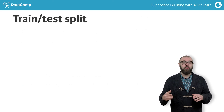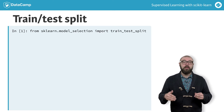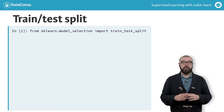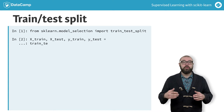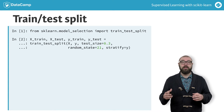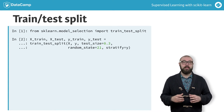To do this, we first import train_test_split from sklearn.model_selection. We then use the train_test_split function to randomly split our data.